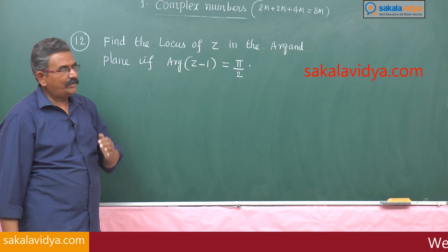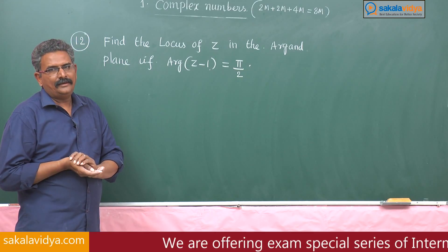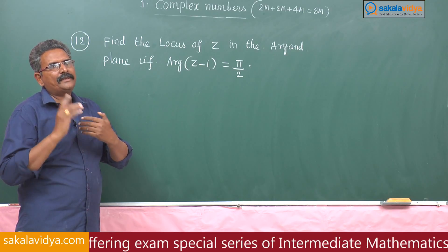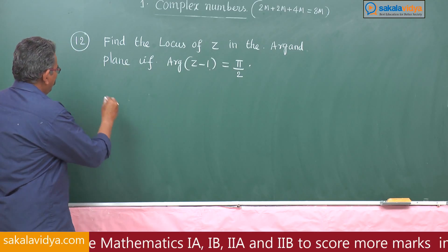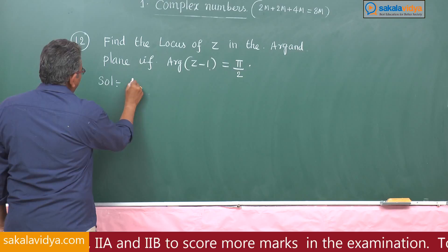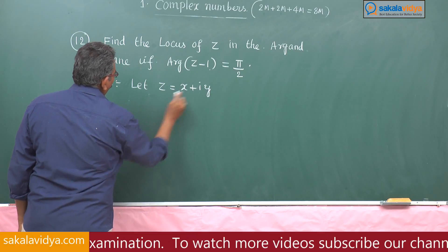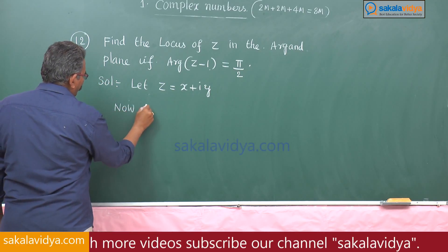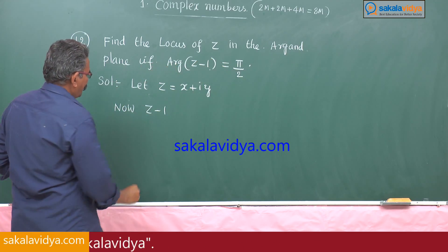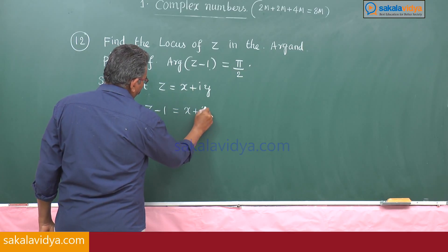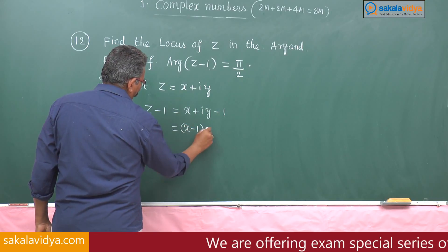Generally in coordinate geometry, any point on the locus is taken as (x, y). In the Argand plane, x comma y represents a complex number x plus iy. So let z equal to x plus iy. Now let us find z minus 1, because we have to find the argument of z minus 1. That is x plus iy minus 1, giving real part x minus 1 plus iy.